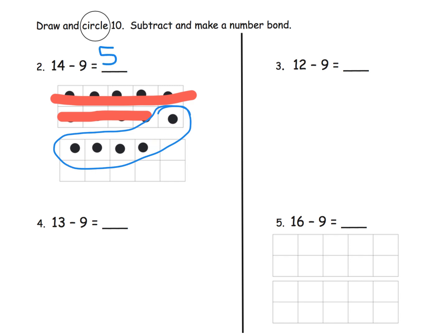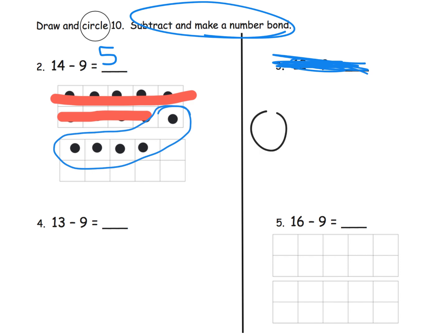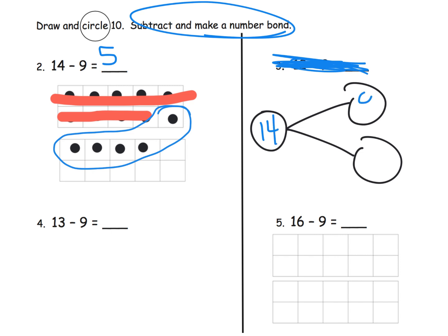Now for the number bond: we've got 14 as the whole, and because we subtracted 9, that goes here. That represents the problem 14 minus 9. Our missing value — we can see it right here — is 1 plus the 4, which is 5.